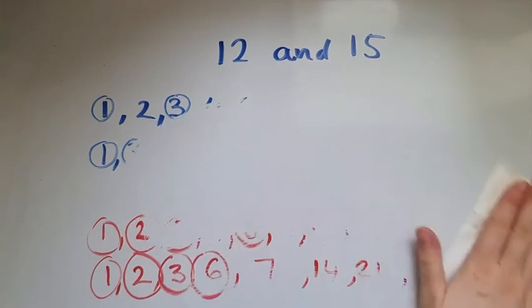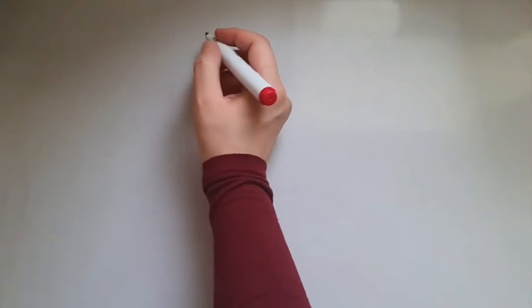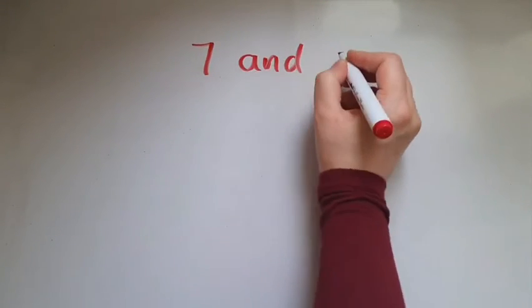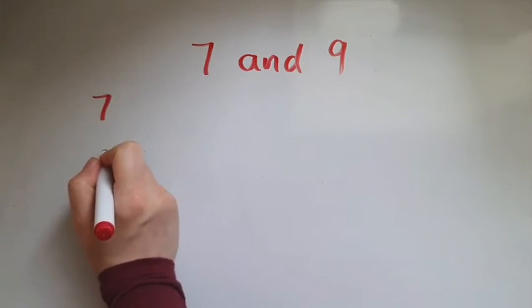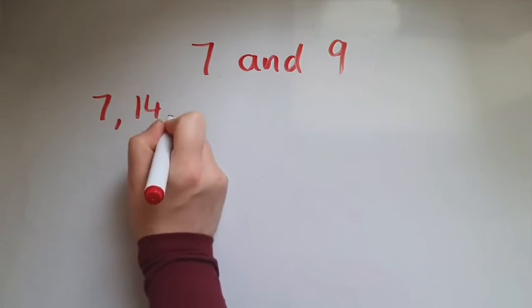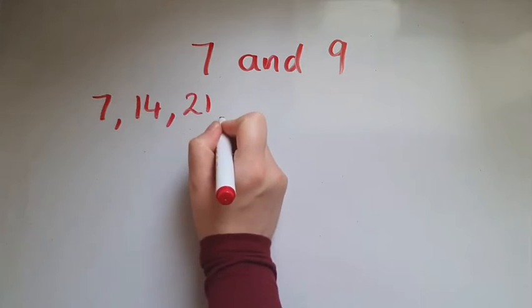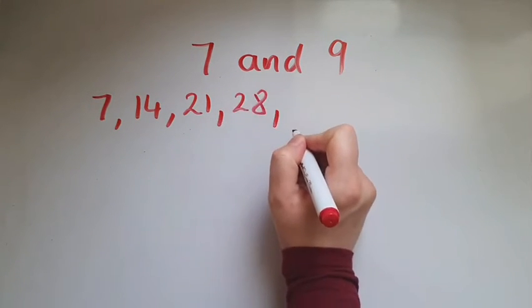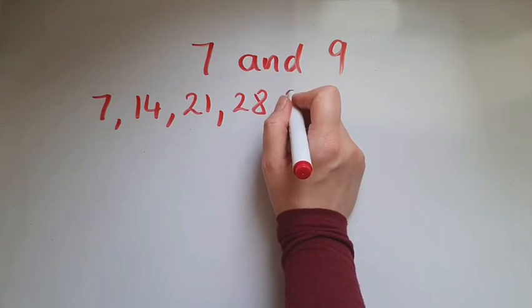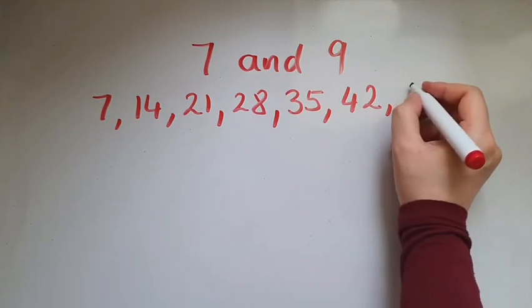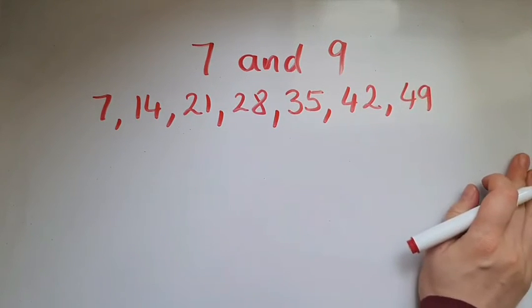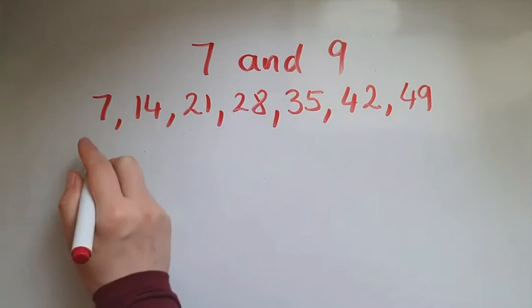What about lowest common multiples? It's a very similar process. Let's find the lowest common multiple of 7 and 9. Starting with 7: 7 times 1 gives us 7, 7 times 2 is 14, then we have 21, 28, 35, 42, 49, and so on.